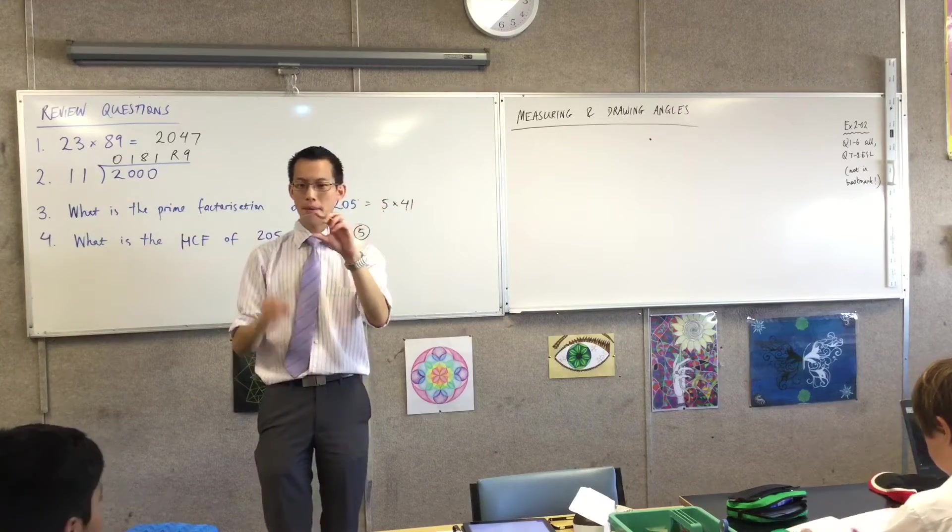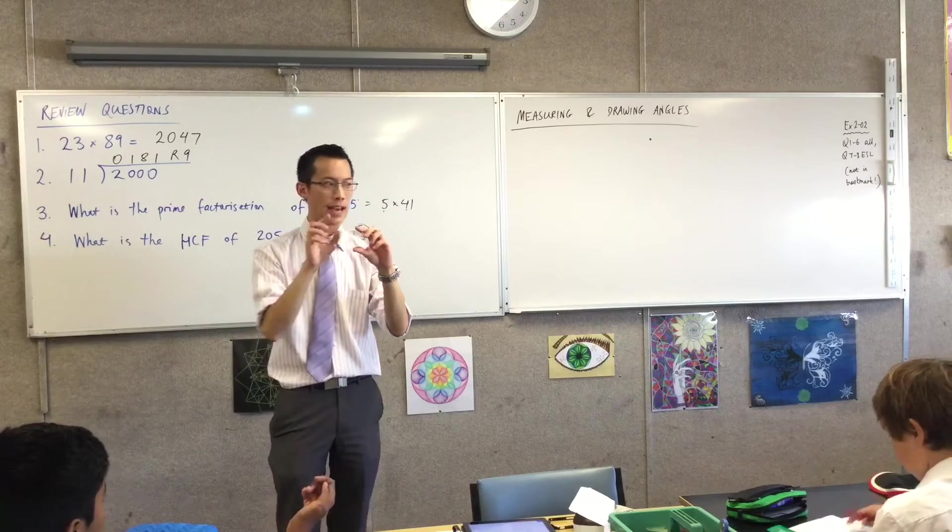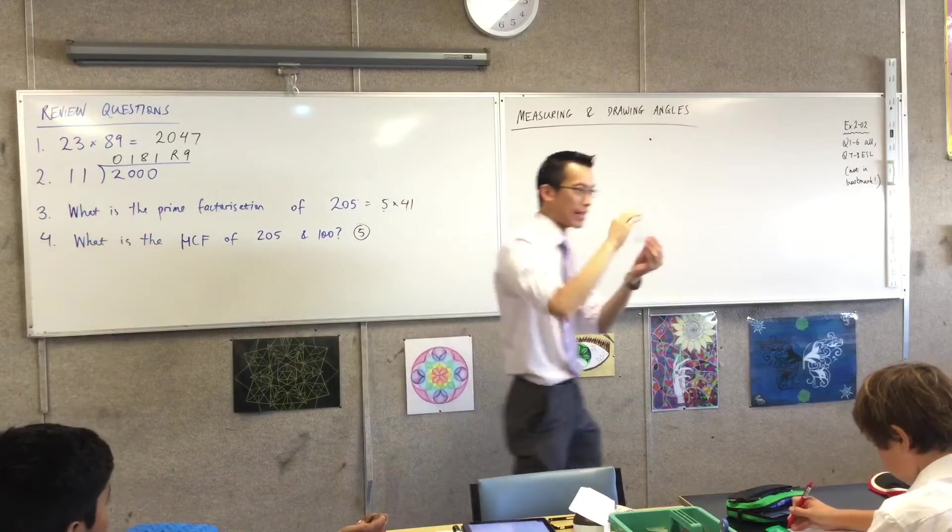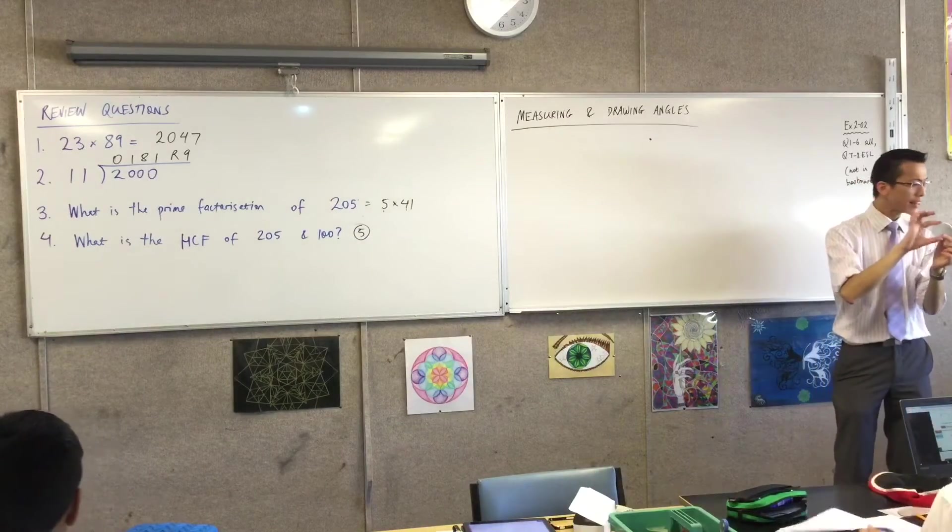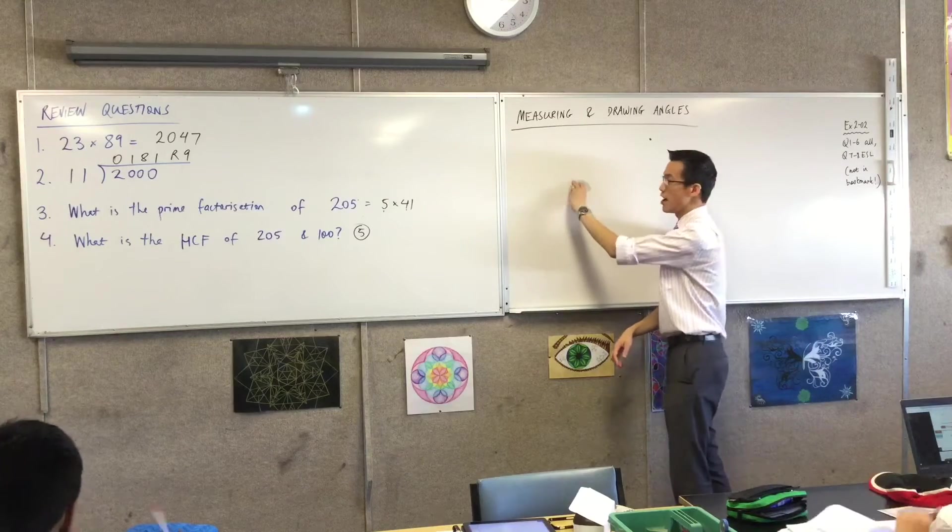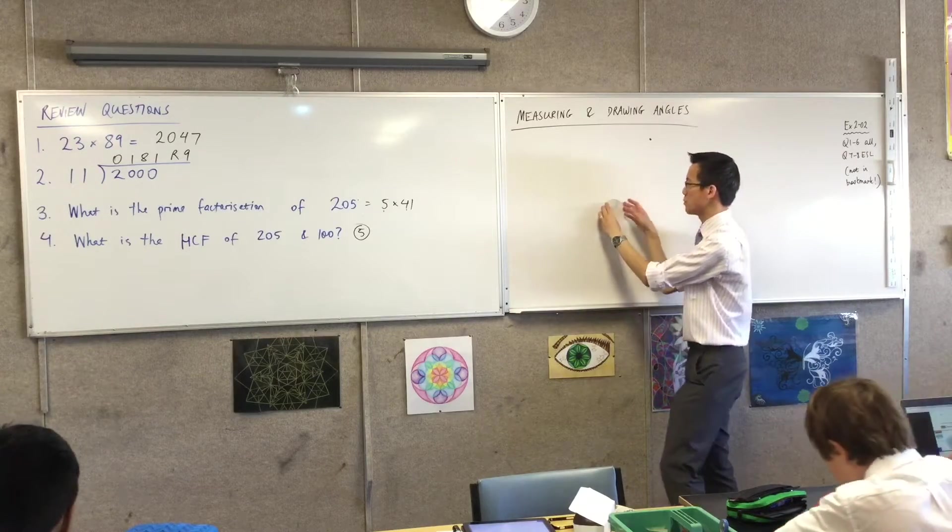This is our tool for being able to work out what is the size of an angle, how far it's rotating, and that's why it's in the shape of a semicircle. Now, what I'd like you to do is put it onto your piece of paper, onto your page, and I'd like you to actually just trace it really briefly.